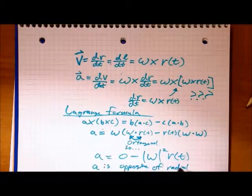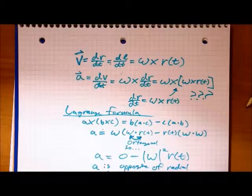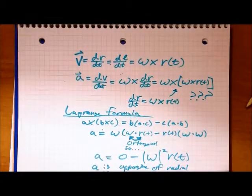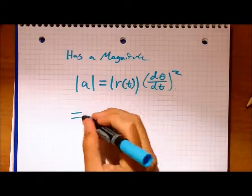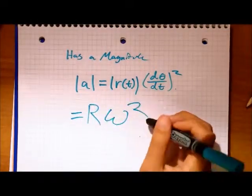This looks pretty familiar, but we are not quite done yet. With one more simple step, we find that our acceleration has a magnitude equal to r times our rate of change of theta, which, again, is simply equal to r squared times theta. QED.